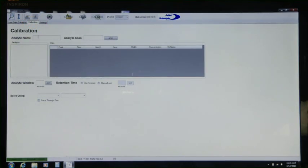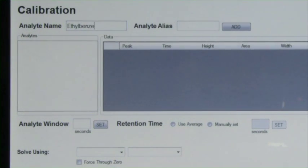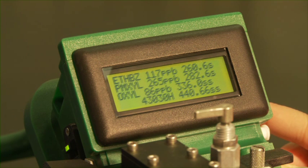In the calibration window, you can enter the names of all the analytes in your standard. The alias is the shortened name for an analyte that will appear on the Frog's screen when it is running independently of a computer.